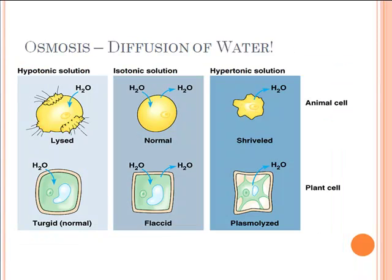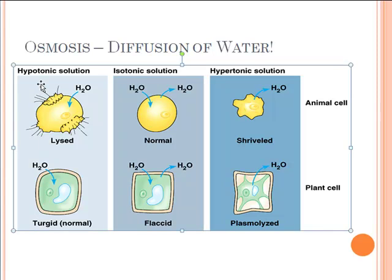Moving on to osmosis — once again, the diffusion of water. Hypotonic, isotonic, and hypertonic are terms that refer to a solution. Hypotonic solutions are very dilute — few solutes, mostly water. Isotonic solutions have equal concentrations. Hypertonic solutions are very solute-concentrated or salty. If the cell is 80% water and a hypotonic solution is 100% pure water, the high water concentration is outside the cell, so water flows in and the cell swells up and bursts.